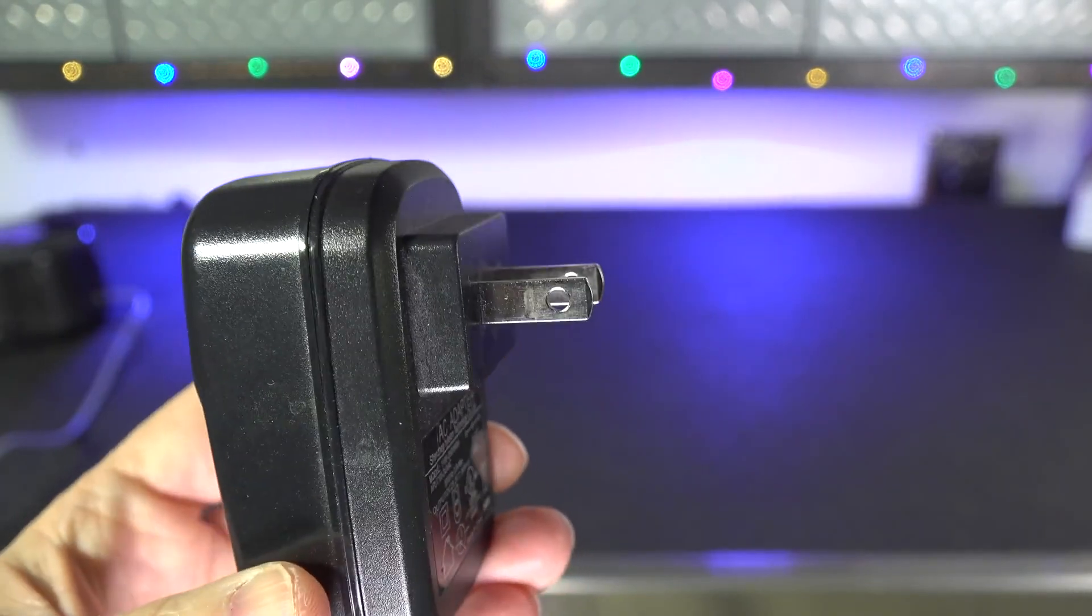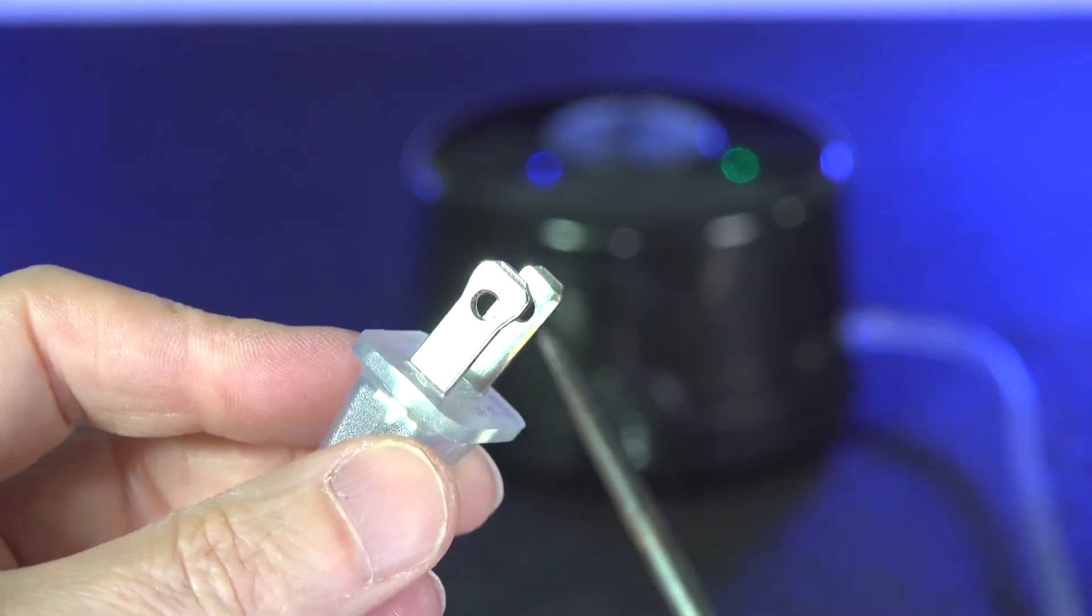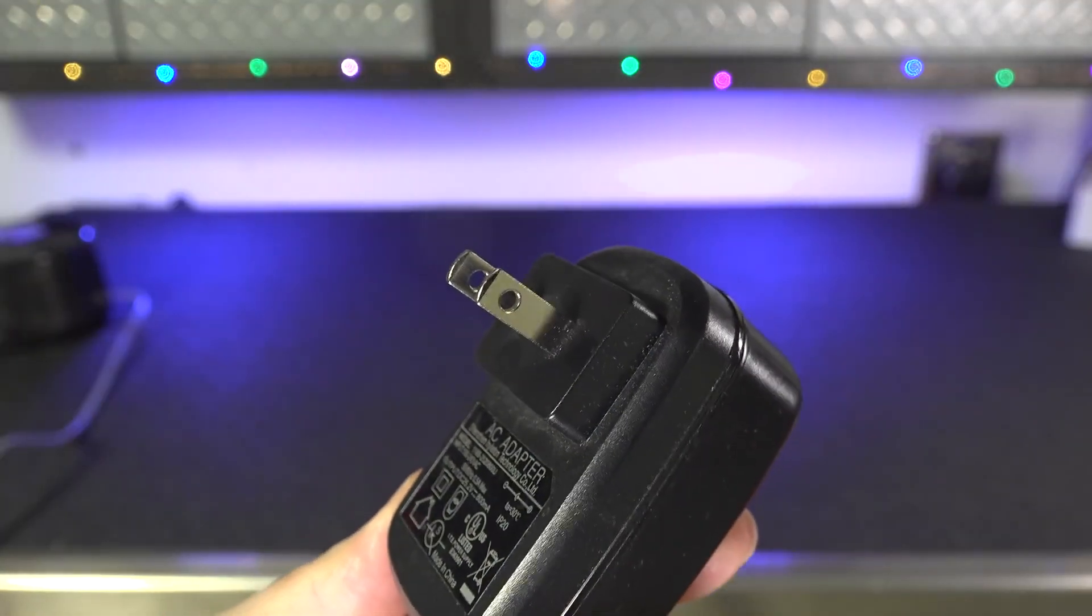And if we look at this transformer, both of these prongs are exactly the same size. Now our first cord had two prongs and this one also has two, so why the difference?